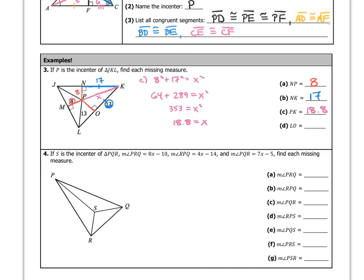For part D, LO: I'll also need the Pythagorean theorem. I know side PO is 8 and the hypotenuse of that small triangle is 13. So: X squared plus 8 squared equals 13 squared, which gives X squared plus 64 equals 169. X squared is 105, therefore X equals 10.2.